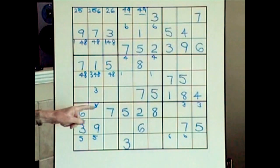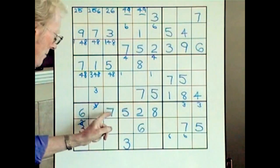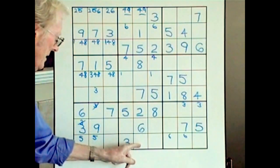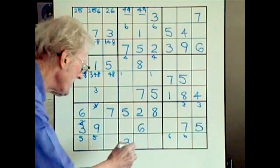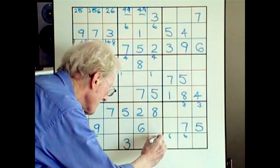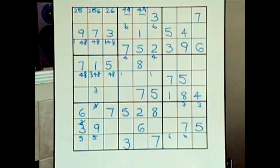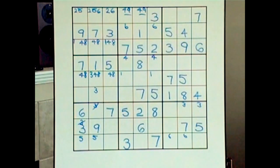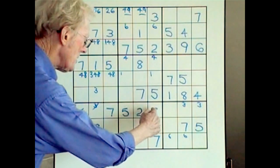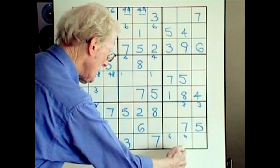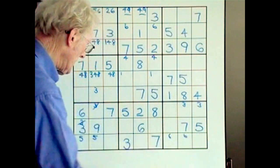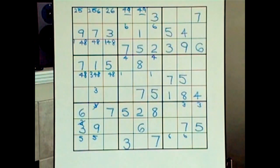Sevens — this is an easy one. Top, middle — has to be down in here, but it can't be there because of that seven, so this now becomes a seven. Eights — eight could go in several spots. I can do a cross here: go across this way and then down this way — we have many places for the eight, so let's leave it.